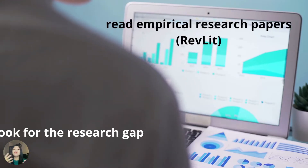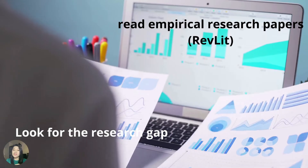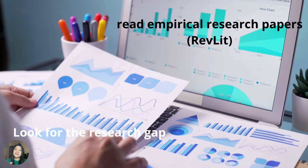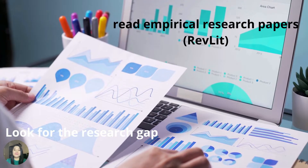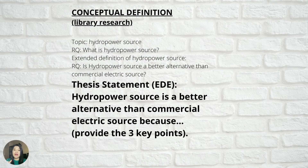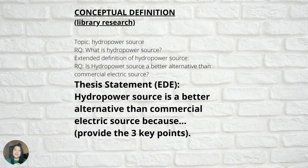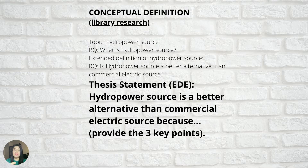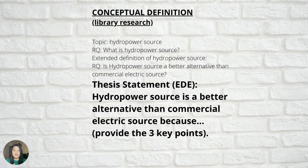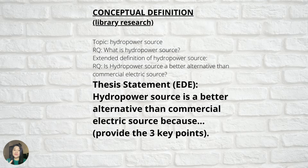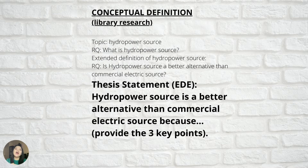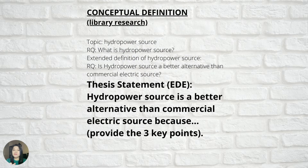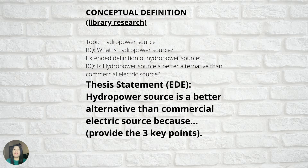The third step is you have to look for the answers to your research questions. You have to read empirical research papers, analyze them, synthesize, and look for research gaps. Once you're done with that, you can now formulate your thesis statement. The thesis statement is your conceptualized answer to your tentative research question — for example, 'Hydropower source is a better alternative than commercial electric source because...' — and then you have to look for three key points, which should be coming from the empirical research papers that you have read.